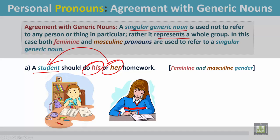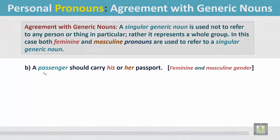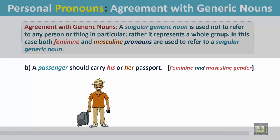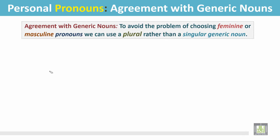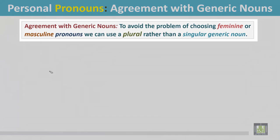Example B: 'A passenger should carry his or her passport.' Again, in this sentence, both masculine and feminine pronouns are used to refer to the singular generic noun 'passenger.'